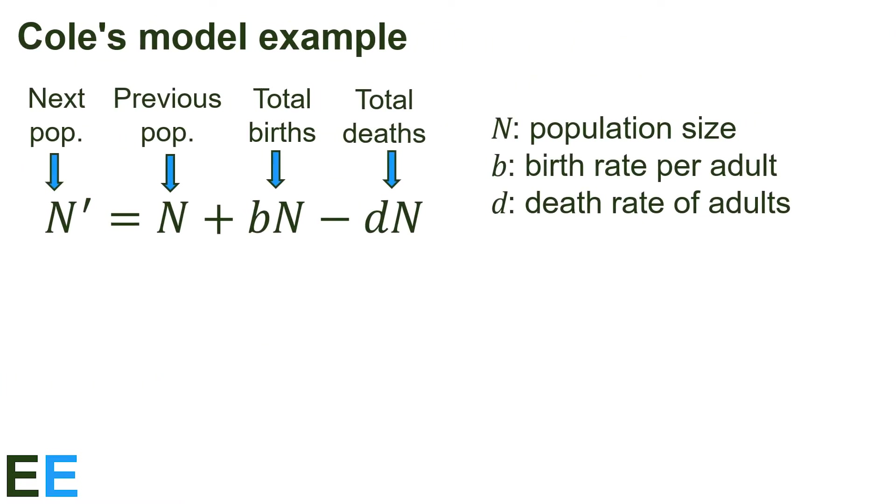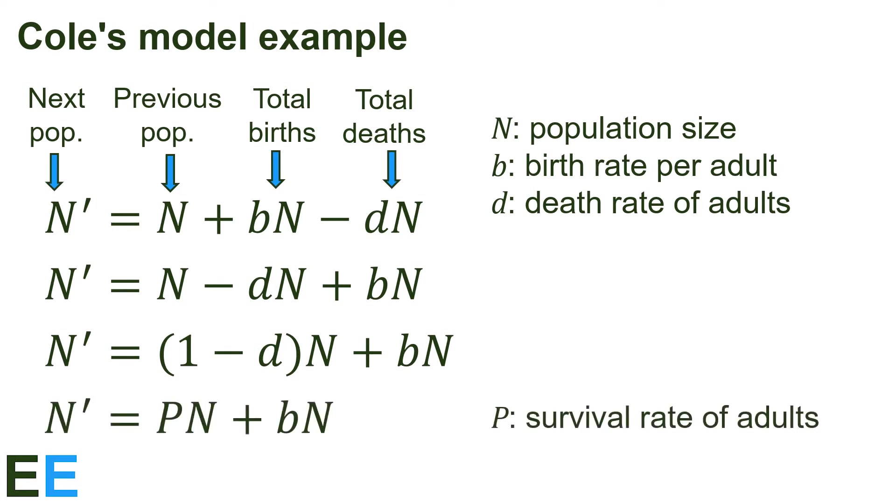The first thing we'll do with Cole's model is simplify the math a little. Here's the starting equation from earlier. First, let's rearrange the terms to move the death term next to the initial population. Then we combine the n minus dn term into 1 minus d in parentheses times n as shown. Now we'll substitute the value p in for the 1 minus d term. d was the per-individual death rate, so 1 minus d gives the per-individual survival rate for each adult individual. This is the equation we'll use to compare the iteroparous and semelparous strategies.